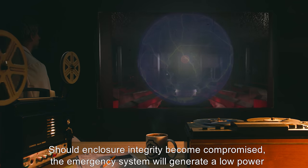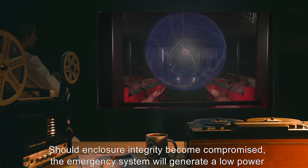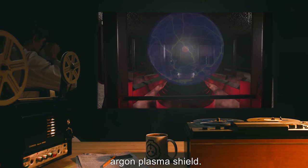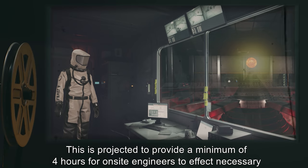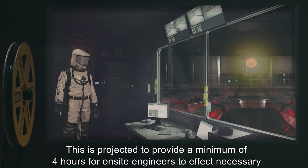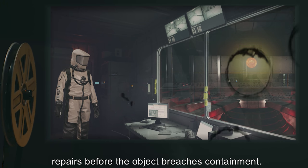Should enclosure integrity become compromised, the emergency system will generate a low-power argon plasma shield. This is projected to provide a minimum of four hours for on-site engineers to effect necessary repairs before the object breaches containment.